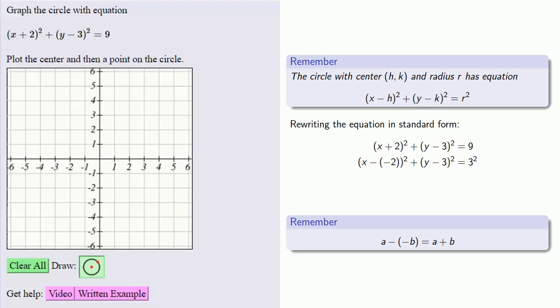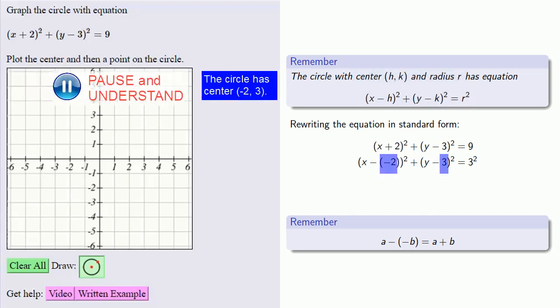And since our equation is now in the standard form, we can read off the location of the center and the radius. The center is at negative 2, 3, and the radius is 3.